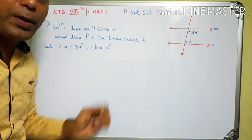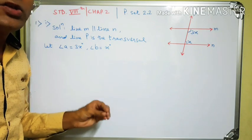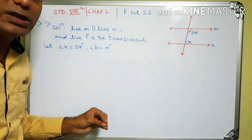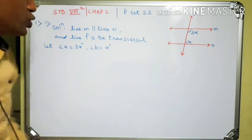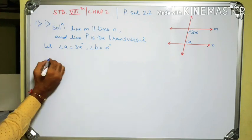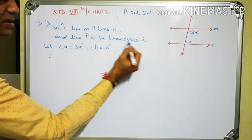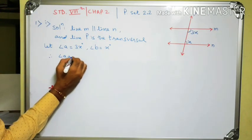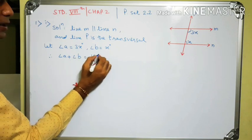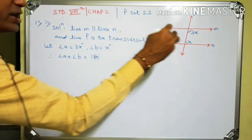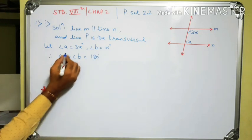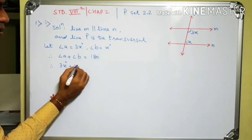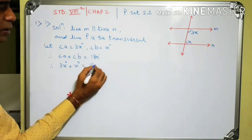Each pair of interior angles formed by parallel lines and the transversal is supplementary. Therefore, since the lines are parallel and P is the transversal, these two angles are supplementary. Therefore, angle A plus angle B equals 180 degrees. So 3x plus x equals 180 degrees.